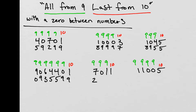Continuing: 9 minus 0 is 9, and 10 minus 1 gives us 9. Next: 9 minus 7 is 2, 9 minus 0 is 9, 9 minus 1 is 8, and 10 minus 1 is 9. Last problem in this set: 9 minus 1 gives us 8, 9 minus 1 gives us 8, 9 minus 0 is 9, 9 minus 0 is 9, and 10 minus 5 is 5. So when there's a zero in between numbers, we just subtract it from 9 like any other digit.